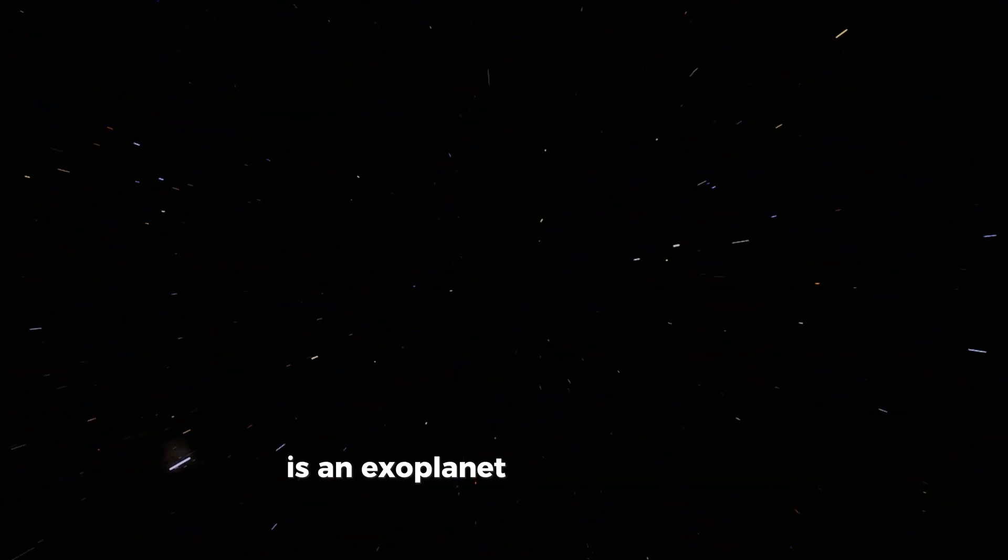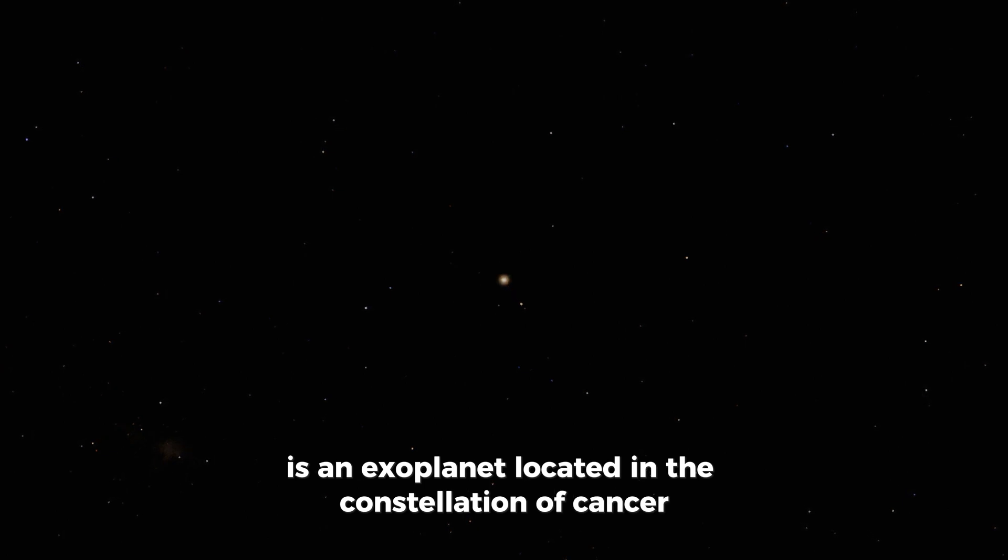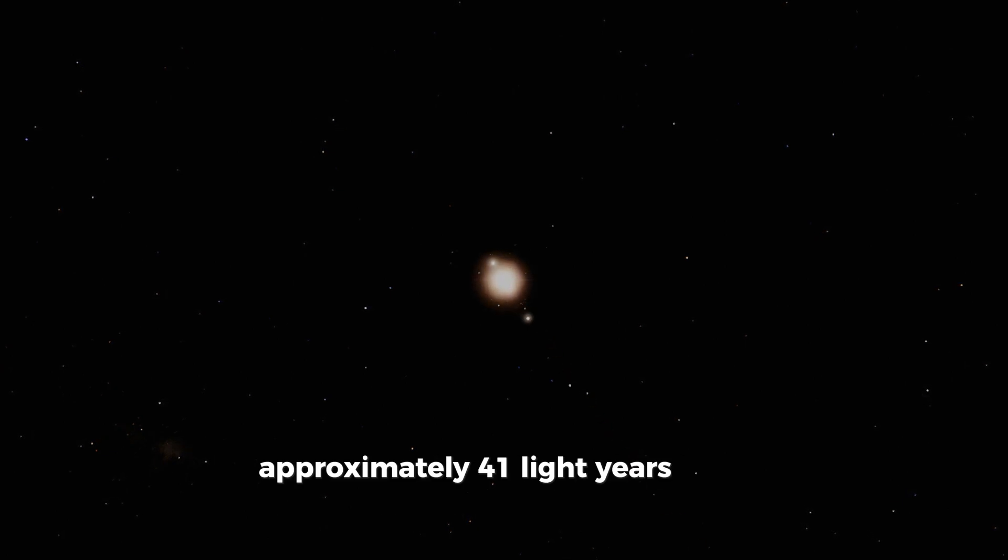55 Cancri e, also known as Janssen, is an exoplanet located in the constellation of Cancer, approximately 41 light-years from Earth.